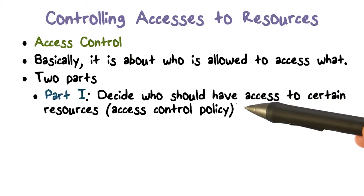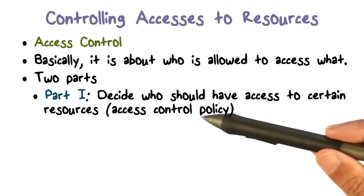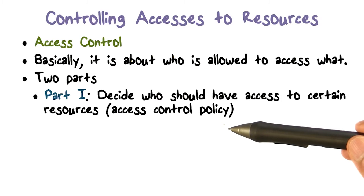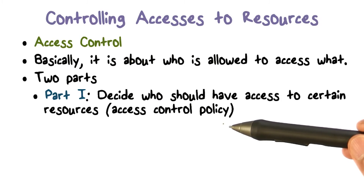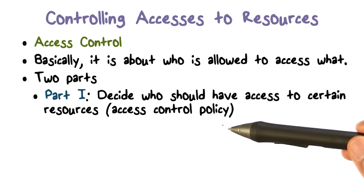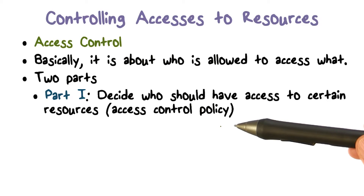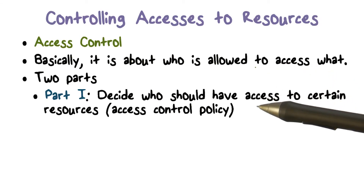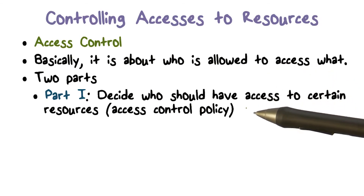In part one, someone has to specify who has access to what. This is called an access control policy. There may be many ways to decide who gets to access what, but there has to be a policy in place that is going to define this for us — telling the system how the resources should be shared and who should be given access to what resource.